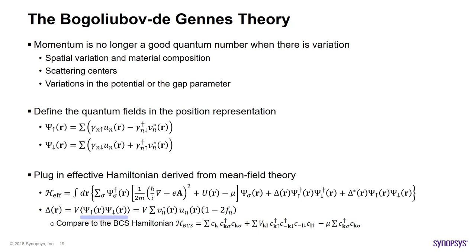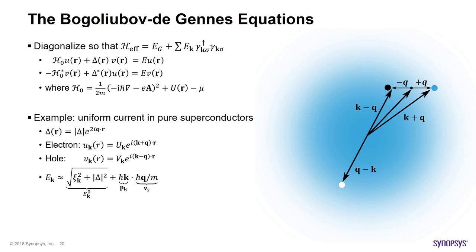The effective Hamiltonian in this theory resembles the simpler BCS Hamiltonian that we saw earlier, except that the four operator interaction terms have been replaced with two operators corresponding to a single pair, times the average of all other pairs, denoted by the position-dependent delta. Again, you see the signature of the mean field theory, where the many-body interactions are replaced by interactions between the single pair and the average of the rest of the system. However, because this delta parameter depends implicitly on the field operators, we need to use iterative techniques to solve for delta and the fields self-consistently.